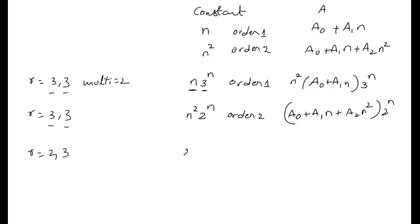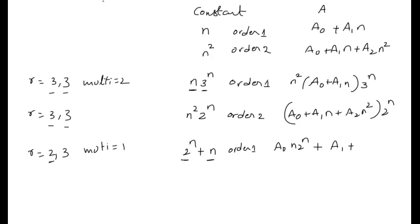Suppose roots are r = 2, 3 and the function is 2^n + n. For the 2^n part, it matches root 2 with multiplicity 1, so that part of the particular solution is a₀·n·2^n. For the polynomial n of order 1, the solution is a₁ + a₂·n. The full particular solution combines both parts.